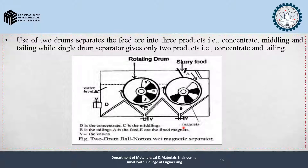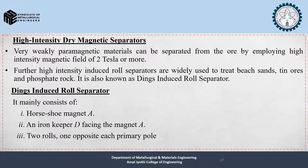High intensity dry magnetic separators: very weakly paramagnetic materials can be separated from the ore by employing a high intensity magnetic field of 2 Tesla or more. High intensity induced roll separators are widely used to treat beach sands, tin ores, and phosphate rocks. This type is also known as the Dings induced roll separator.